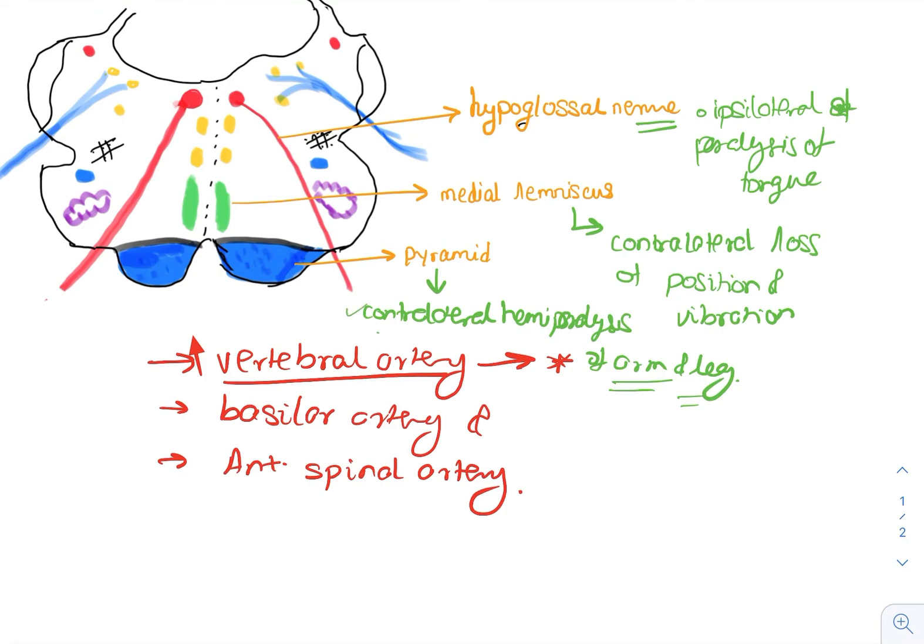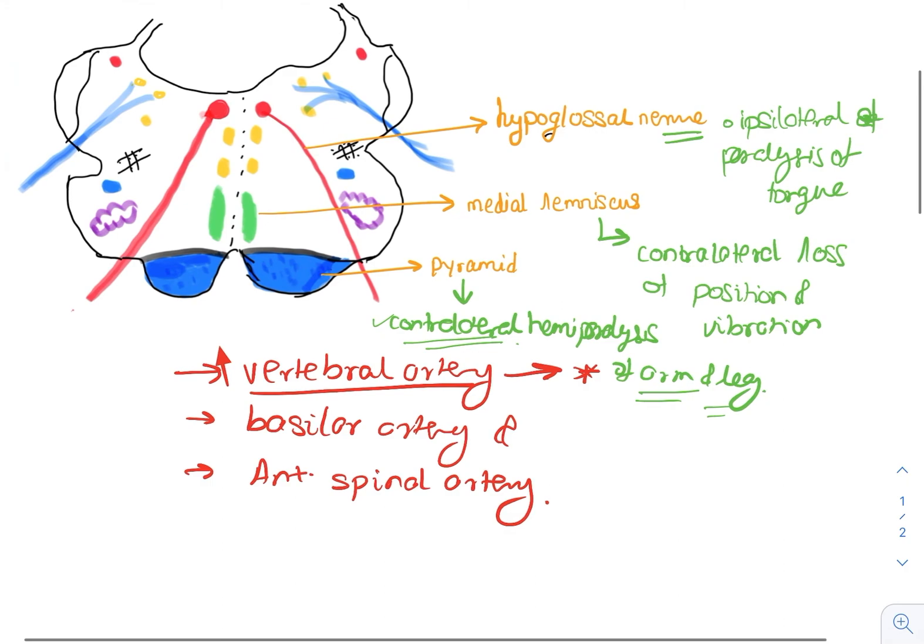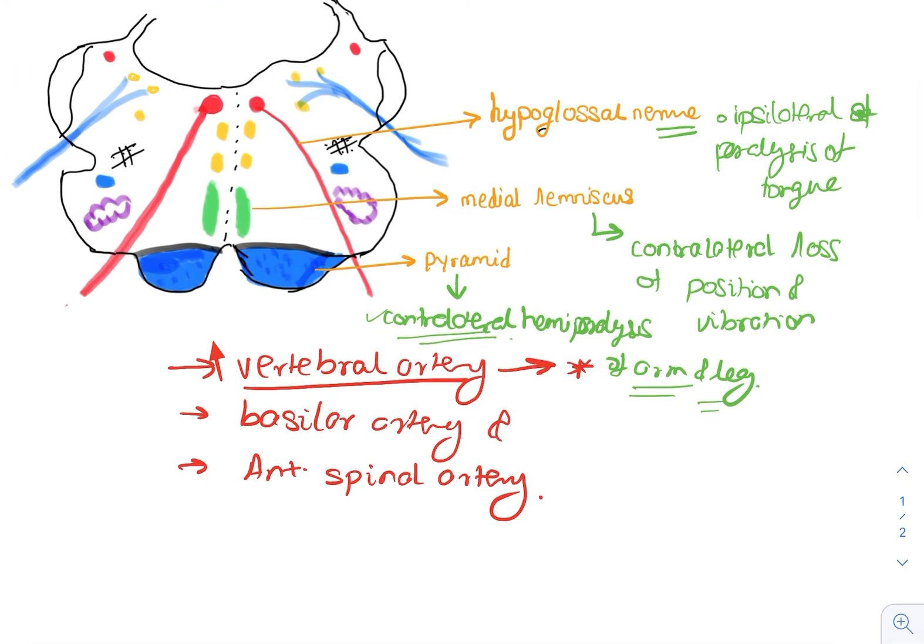In damage to the hypoglossal nerve, we see ipsilateral paralysis of the tongue—the tongue deviates towards the affected side. In contrast, damage to the medial lemniscus system and the pyramidal decussation produces contralateral effects.